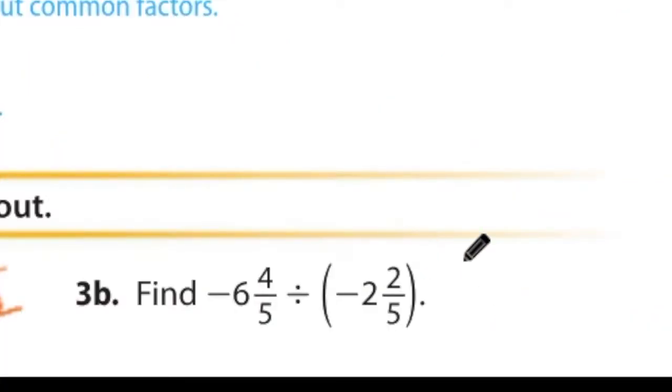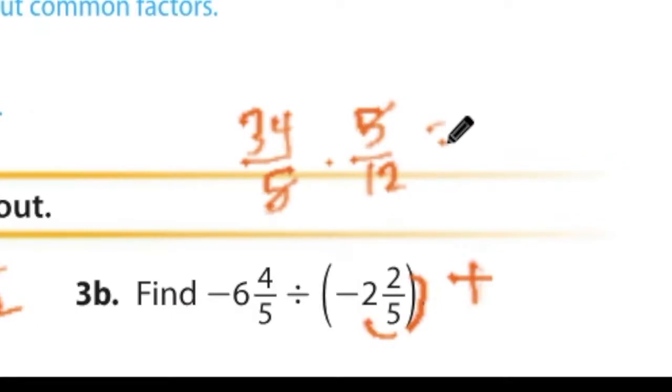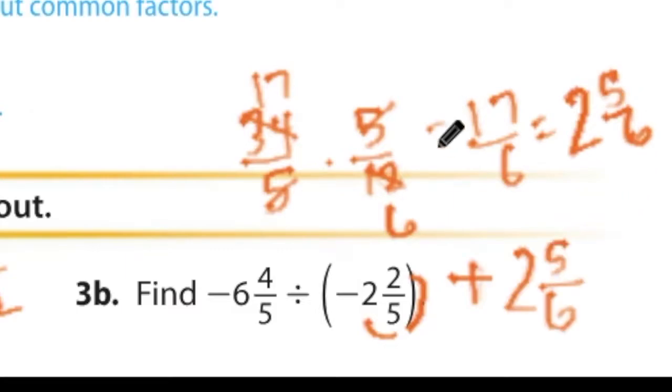For 3b, we have a negative divided by a negative, so I know my answer is going to be positive. 6 times 5 is 30. 30 plus 4 is 34 over 5. 2 times 5 is 10. 10 plus 2 is 12. Reciprocal of 12 over 5 is 5 over 12. The 5s cancel out, and we are left with 34 over 12. That can be reduced. 2 goes into 12 6 times. 2 goes into 34 17 times. 17 6 reduces to 2 and 5 6. Positive 2 and 5 6 for the answer.